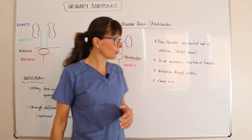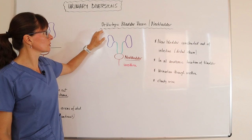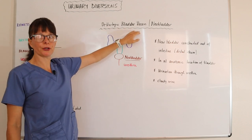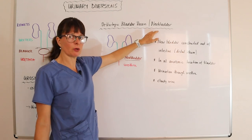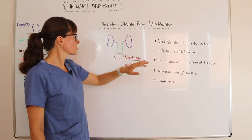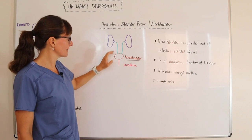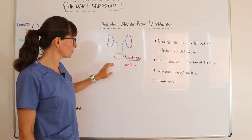And what we have over here is called an orthotopic bladder reconstruction, also known as a neobladder, meaning new bladder. So now we have the kidneys, the ureters, that neobladder, and the urethra.